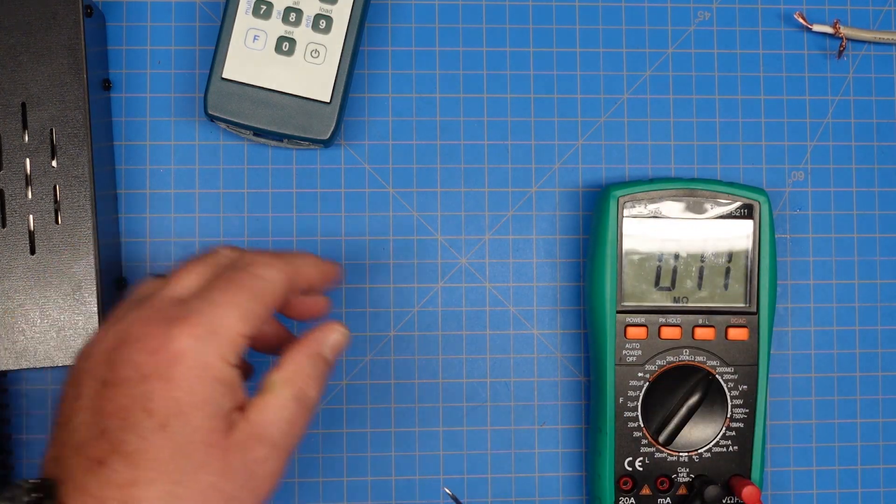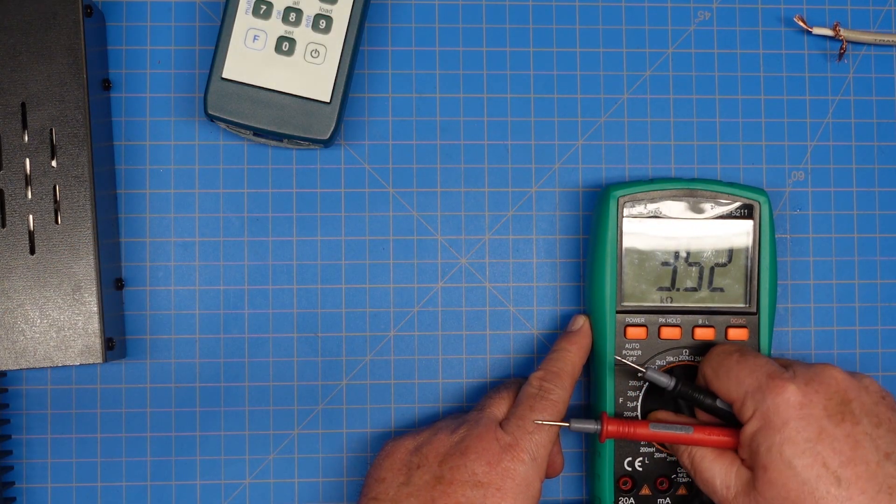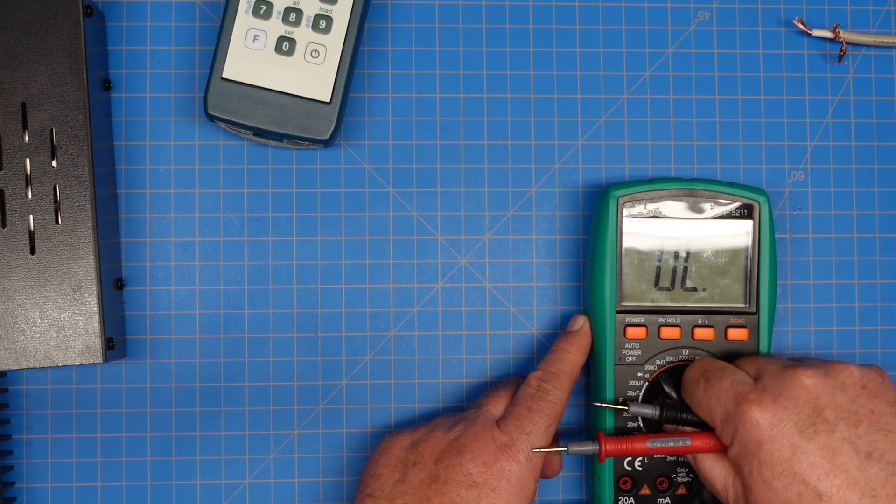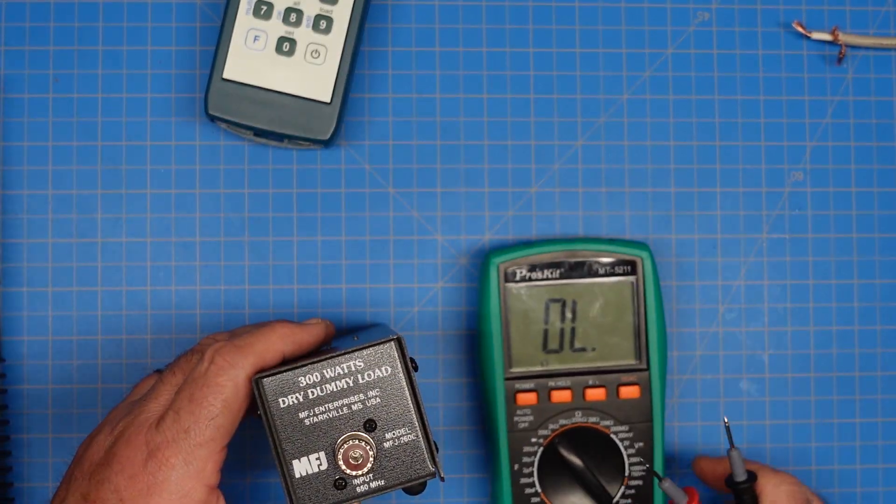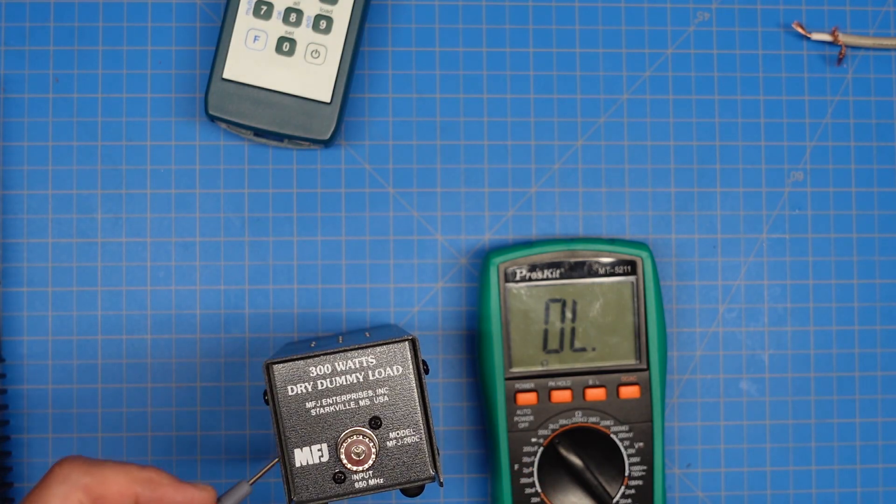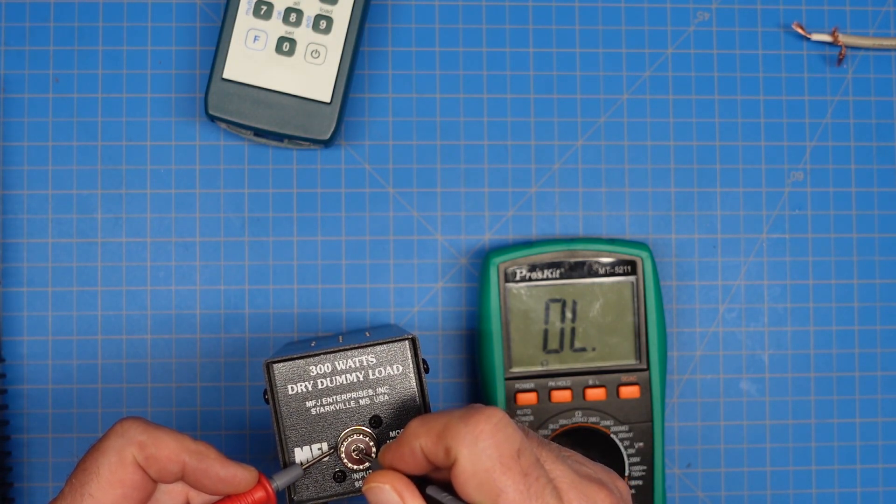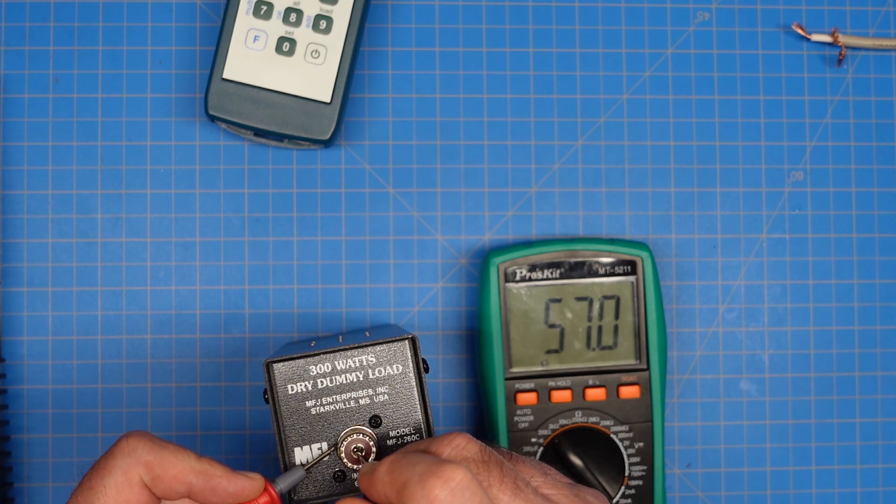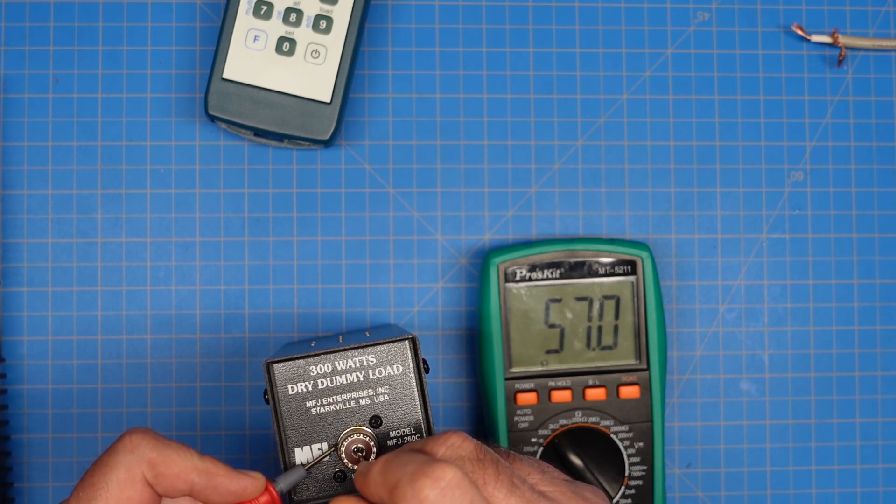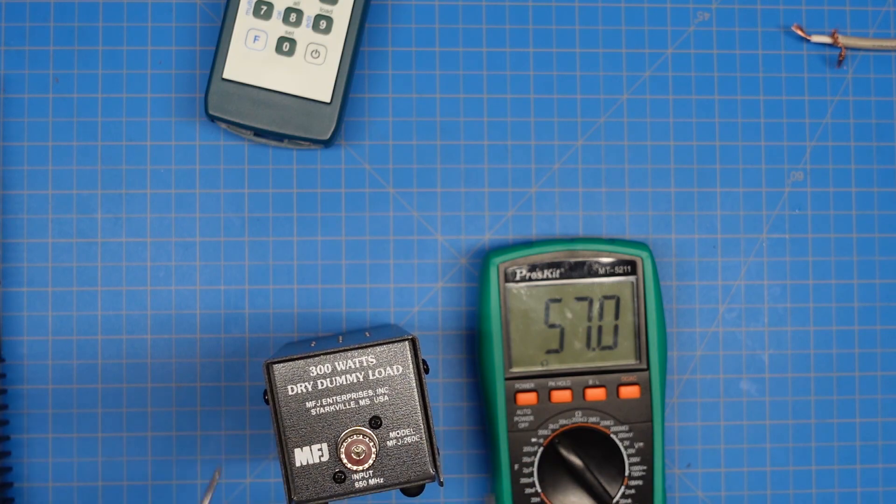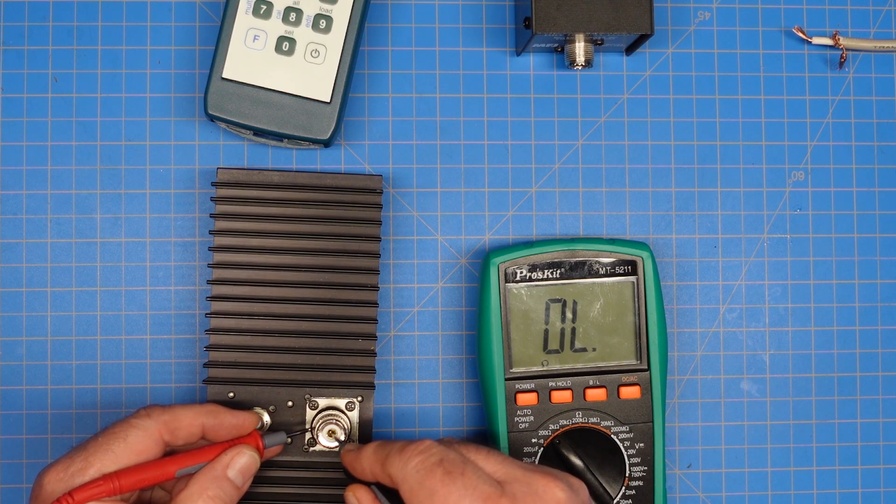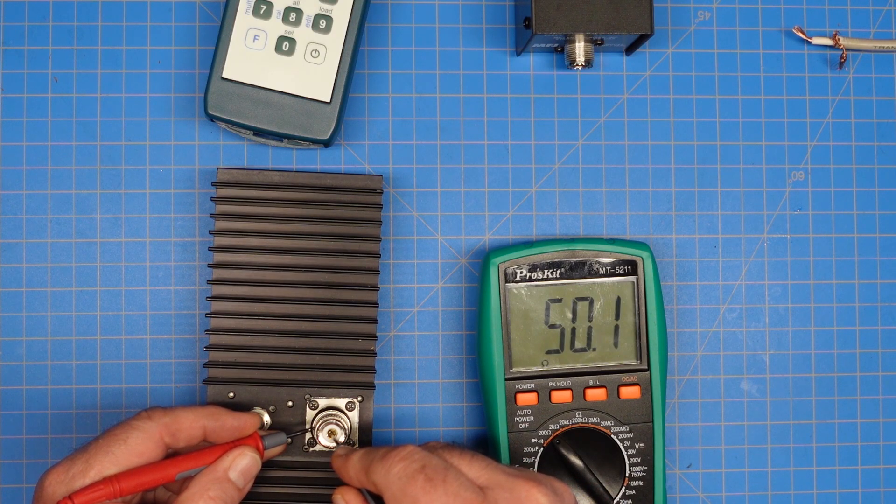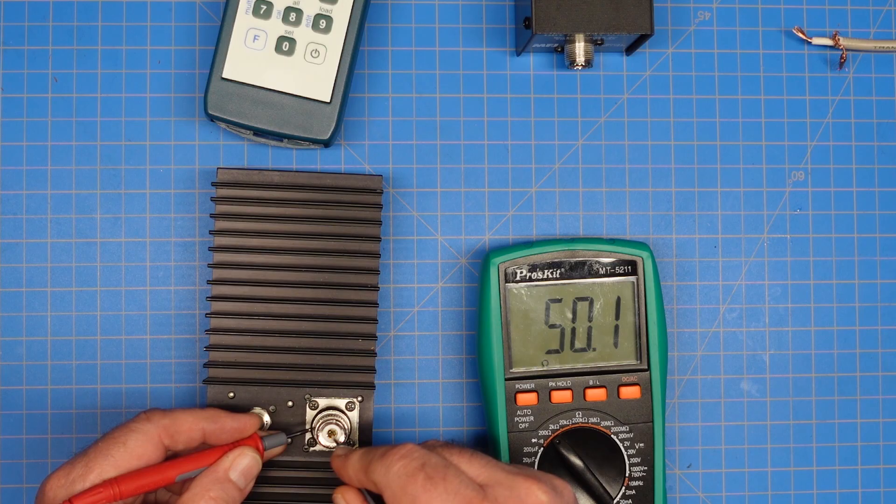So quickly, let's compare that to our other two dummy loads. Spoiler alert, I've already done this off camera, and I know what it's going to read, but I want to show you all. So this is the other MFJ dummy load. 56, 57 ohms of resistance across the terminals. None of these are usually exactly 50. And here's the Cellwave. Pretty darn perfect, that's 50.